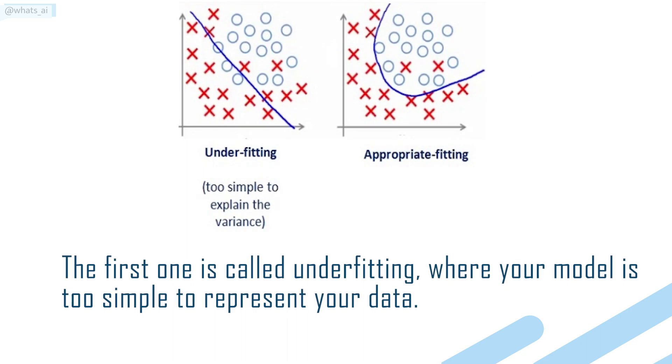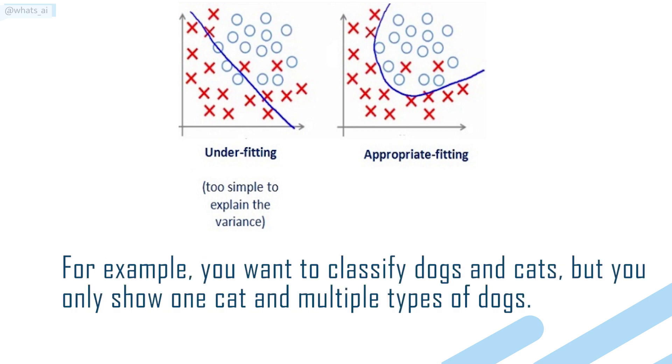The first one is called Underfitting, where your model is too simple to represent your data. For example, you want to classify dogs and cats, but you only show one cat and multiple types of dogs.